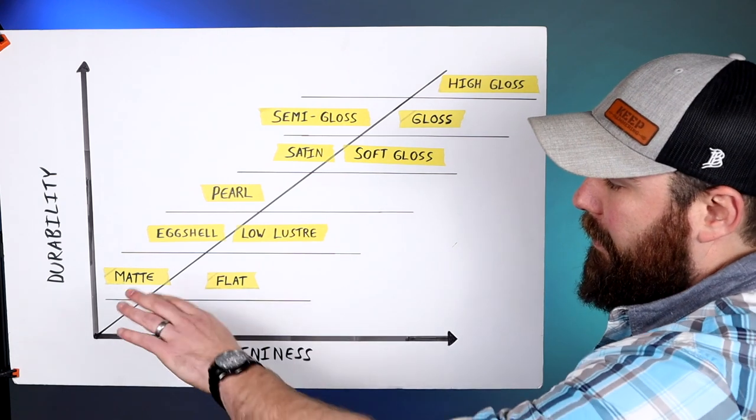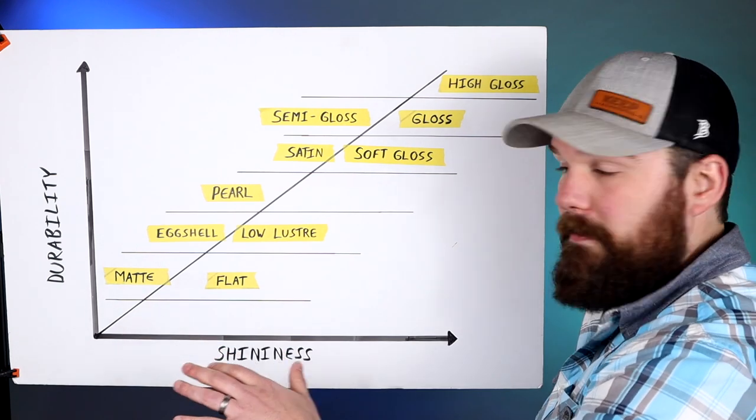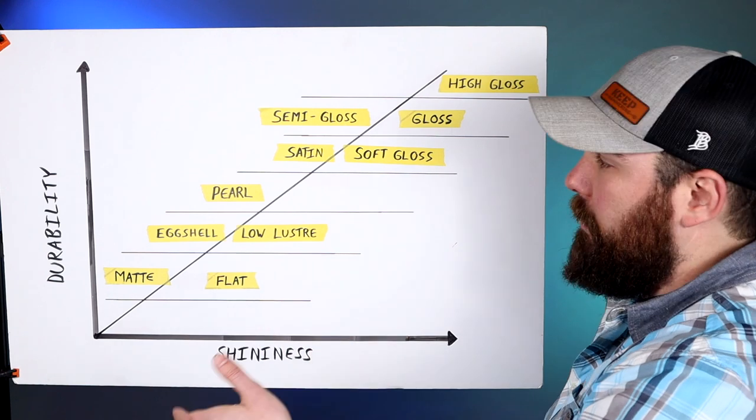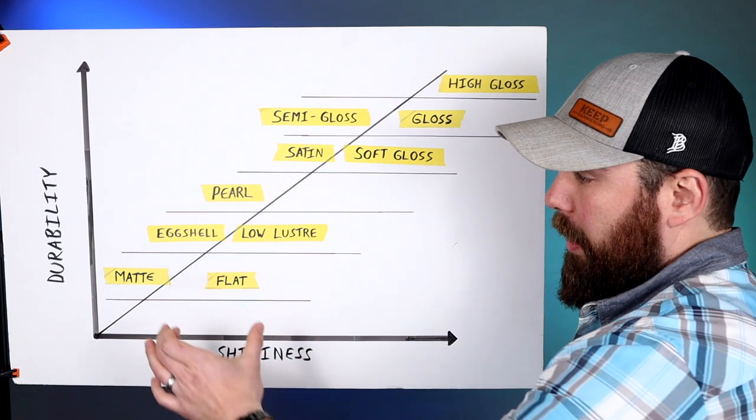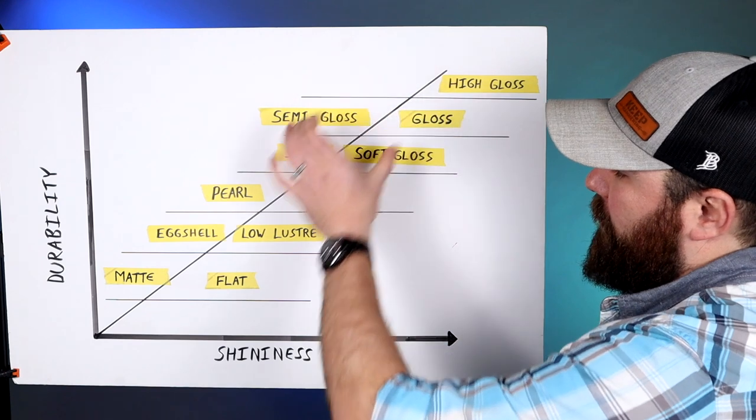On the other end of the spectrum you've got flat and matte, which have little to no sheen to them, which just means they're less durable than their shinier counterparts. Now you might be wondering why these terms are paired going up the chart here.